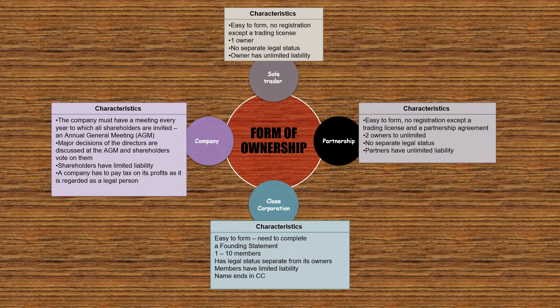Close corporation characteristics: easy to form, need to complete a founding statement, one to ten members, has legal status separate from its owners, members have limited liability, and the name ends with CC. A company must have a meeting every year to which all shareholders are invited — this is an Annual General Meeting, or AGM.